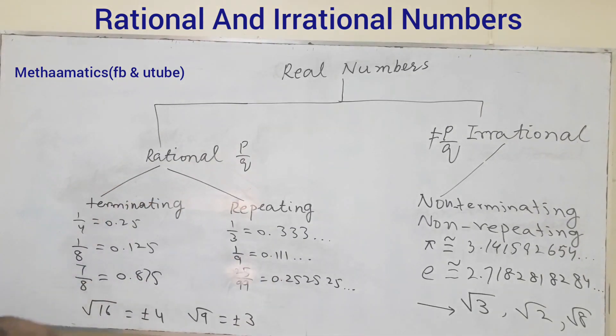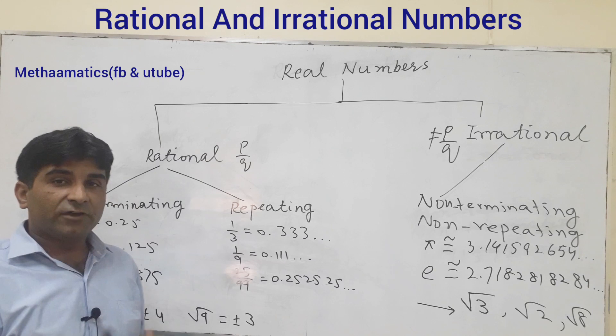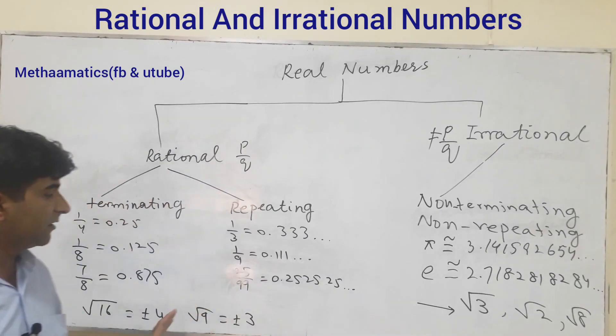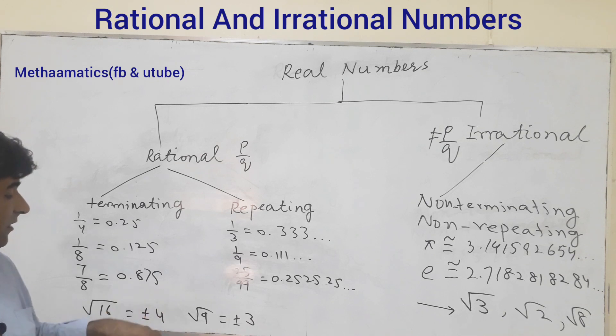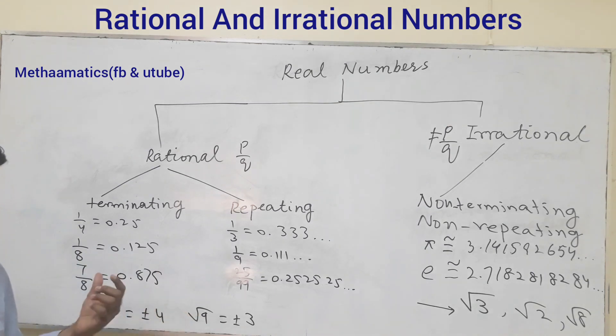Another property of rational numbers: all the perfect squares are rational numbers. For example, square root of 16 equals plus minus 4, square root of 9 equals plus minus 3. When you find the square root of any perfect square, you will get a rational number. You will get a result which will be a positive or negative number, meaning you will get a number from the set of integers.